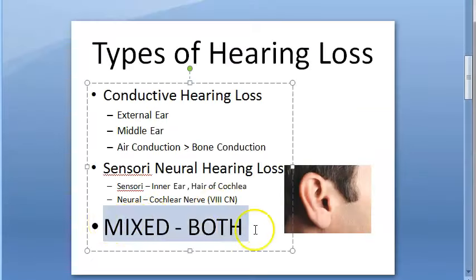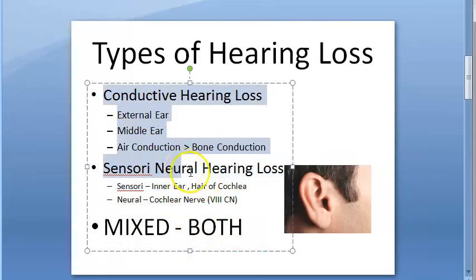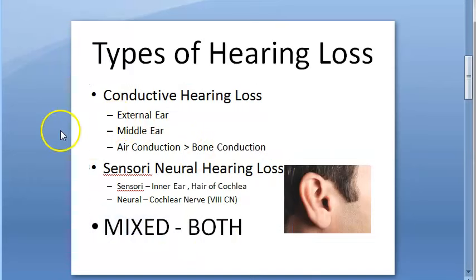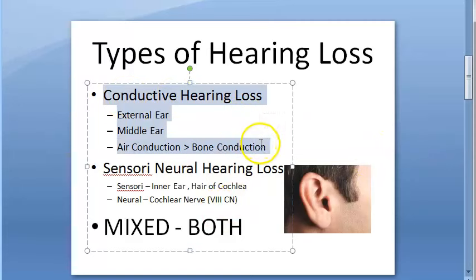There is one more terminology: mixed hearing loss, where a person has both conductive and sensorineural hearing loss simultaneously. This can happen with trauma, ototoxic drugs, or even in otosclerosis. Otosclerosis usually causes conductive hearing loss, but mixed hearing loss is also possible.